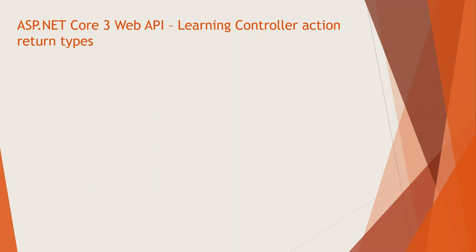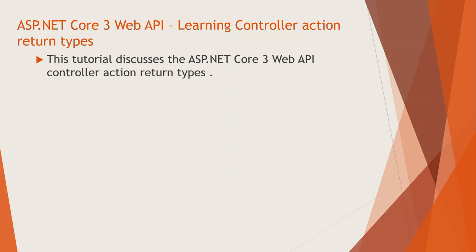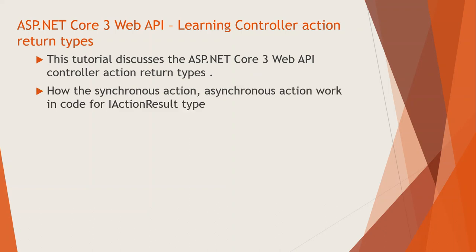Hello and welcome everyone. Today I am going to take a new lesson on ASP.NET Core 3 Web API, which is learning controller action return types. So here is my learning outcome. This tutorial discusses the ASP.NET Core 3 Web API controller action return types. We will cover how the synchronous action and asynchronous action work in code for the IActionResult type. In this lecture I will cover just the simple and synchronous action, and in a later lecture I will take the asynchronous action which needs a bit more work.